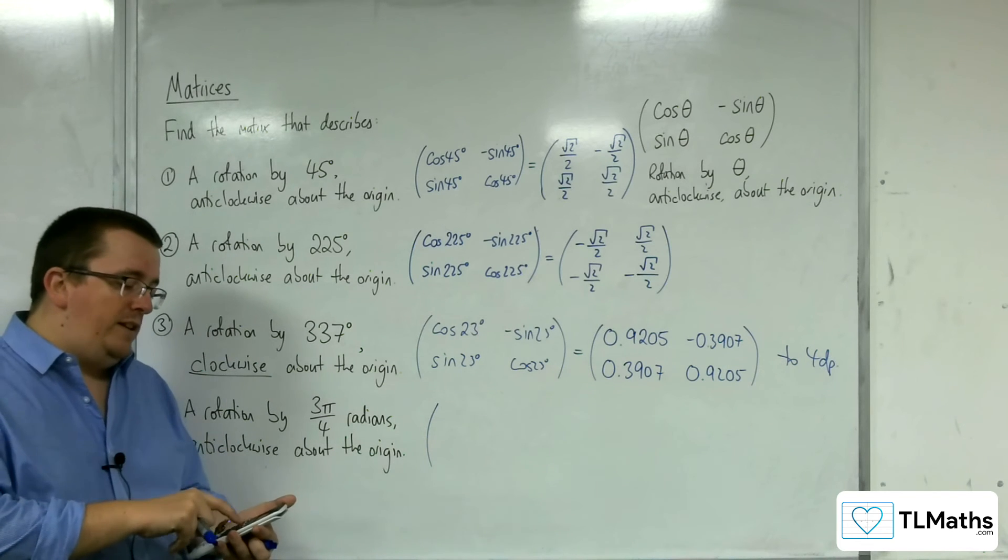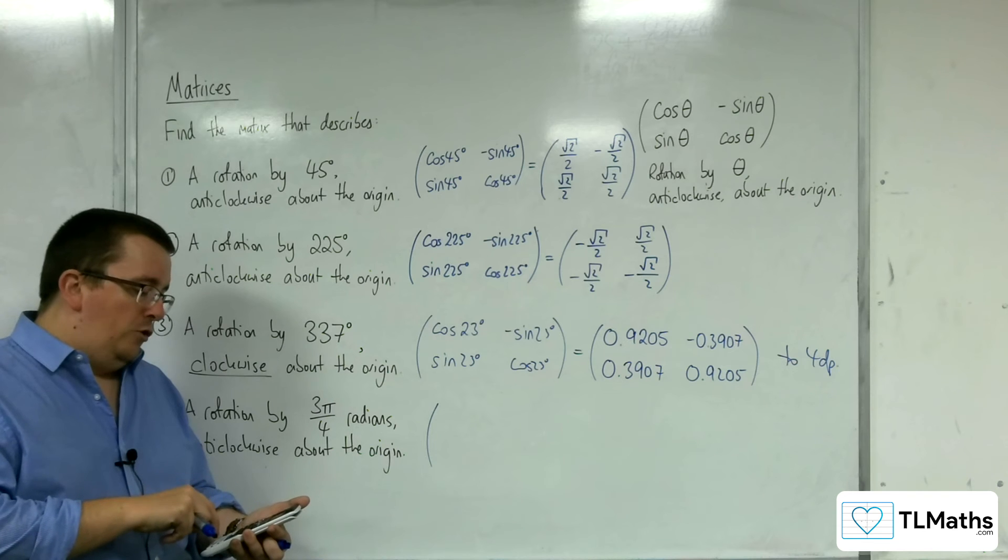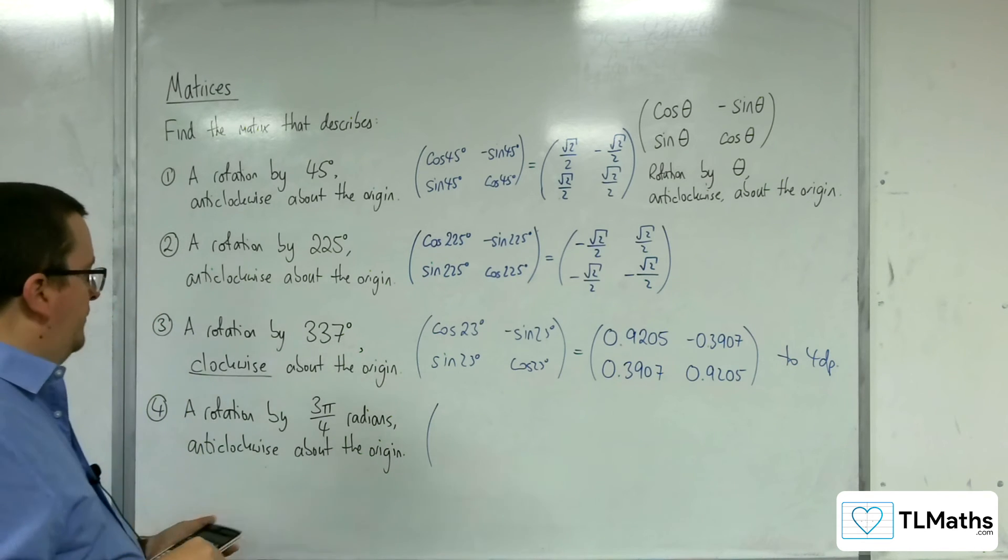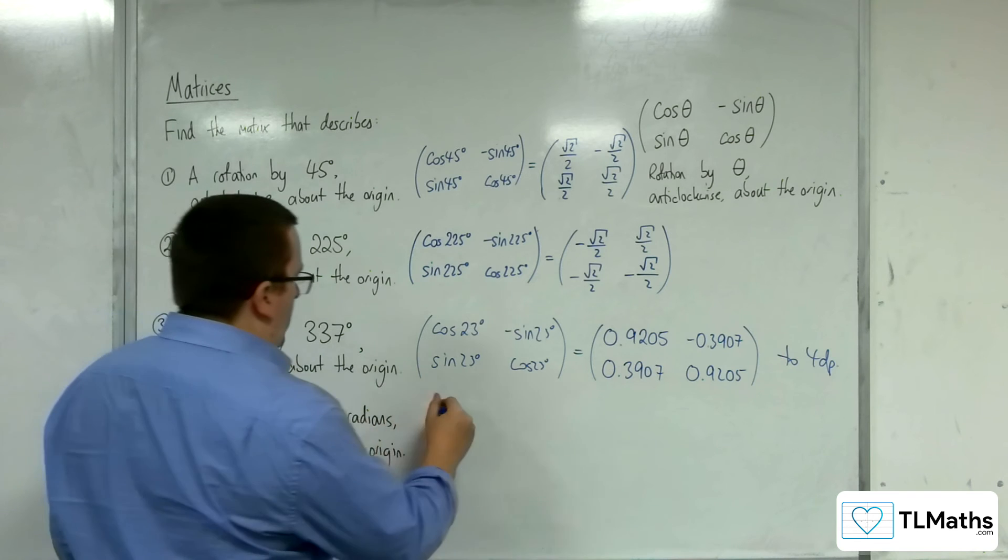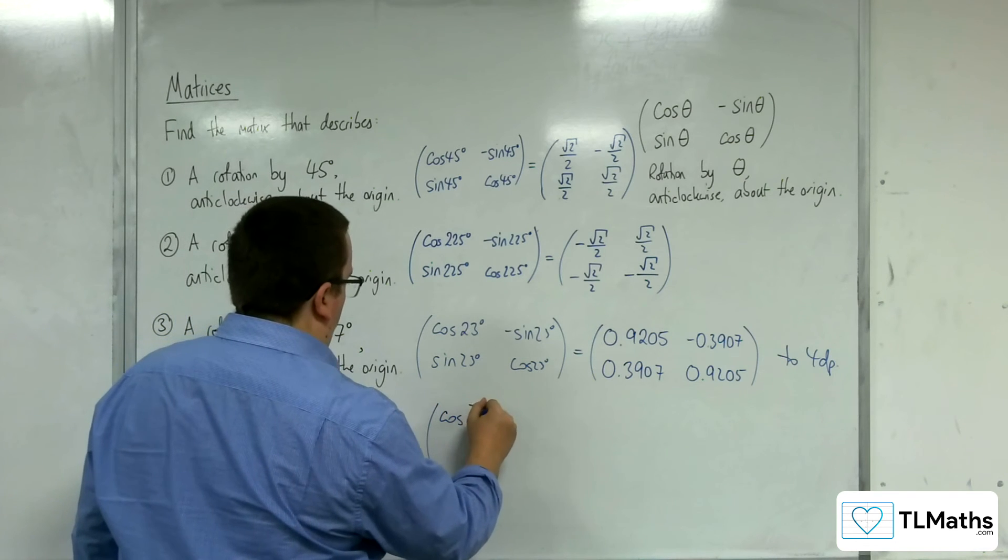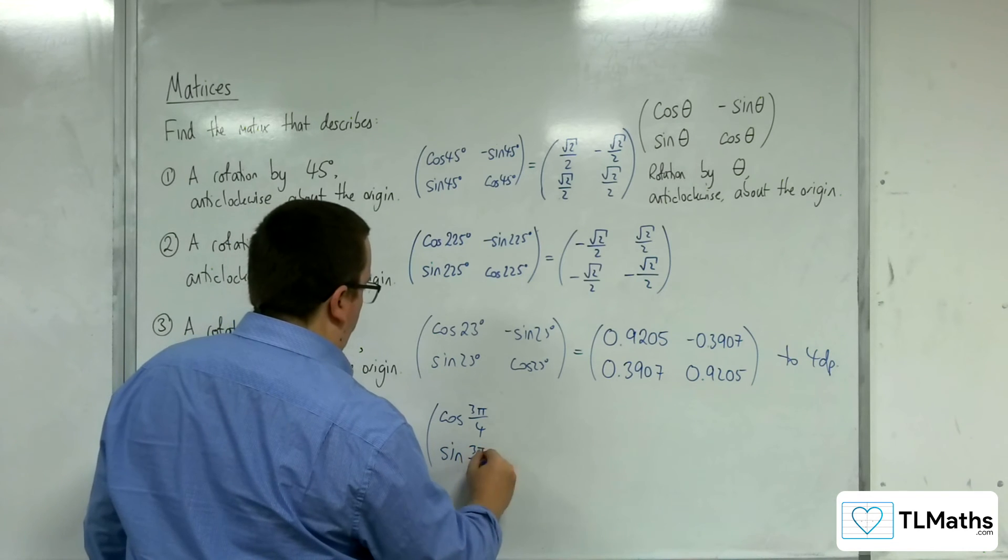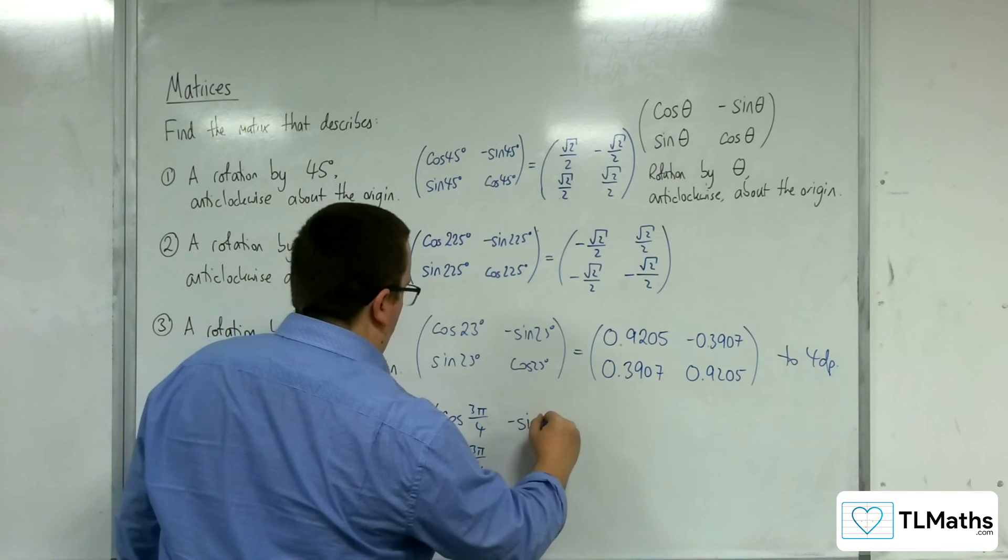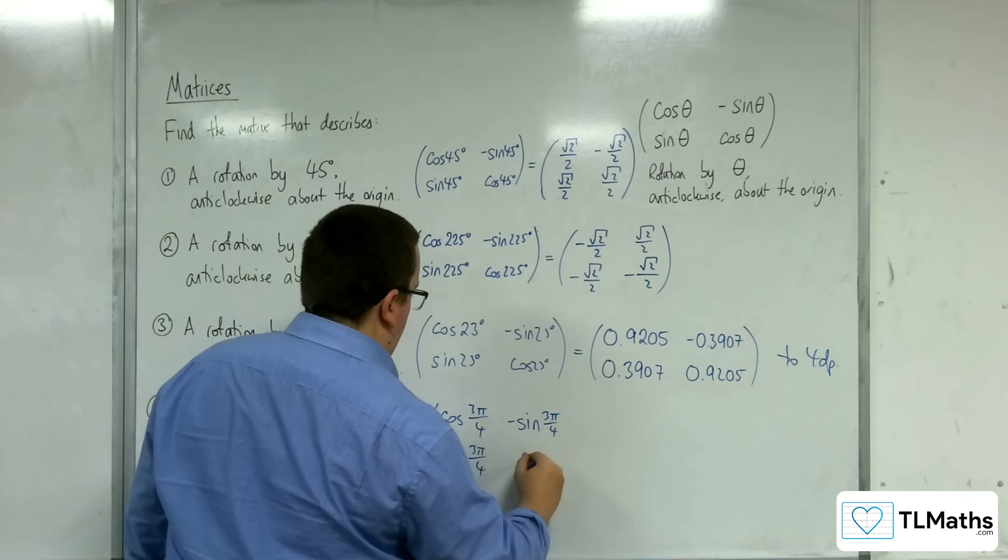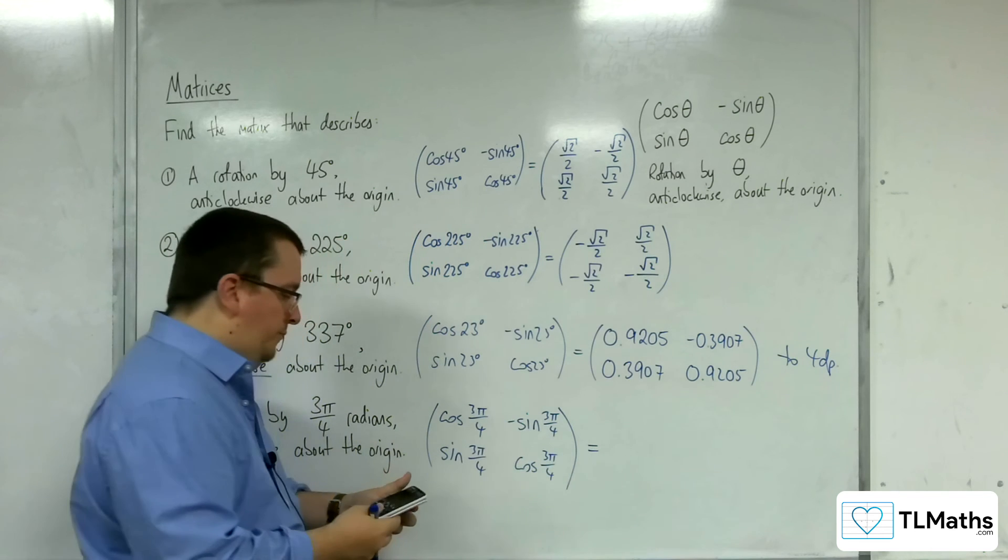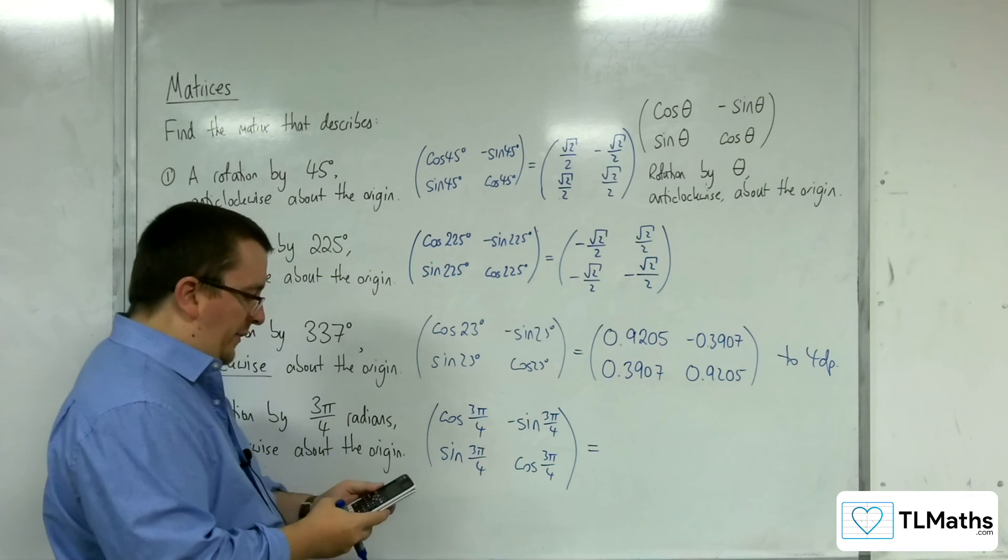So we need to turn our calculator into radians mode. So shift setup, go to angle unit, and turn it into radians. So we have cosine of 3 pi over 4, sine of 3 pi over 4, negative sine of 3 pi over 4, and cosine of 3 pi over 4. So make sure your calculator is in radians.